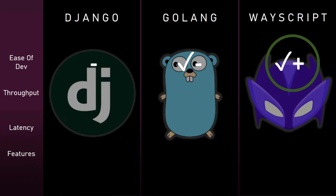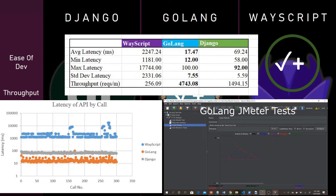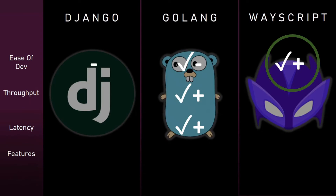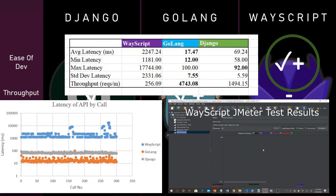After recording and analyzing the JMeter test, I made a couple of graphs to help analyze the results. Golang came in as the clear winner for throughput and latency — it had a latency of under 20 milliseconds per call, which is insanely fast, and a throughput between 1,000 and 5,000 requests per minute. Django came in second with a latency of between 70 and 80 milliseconds per call and a throughput of just over 1,000 requests per minute. WayScript came in last with a latency of approximately 2,000 milliseconds per call — around two seconds — and a throughput of 250 requests per minute.